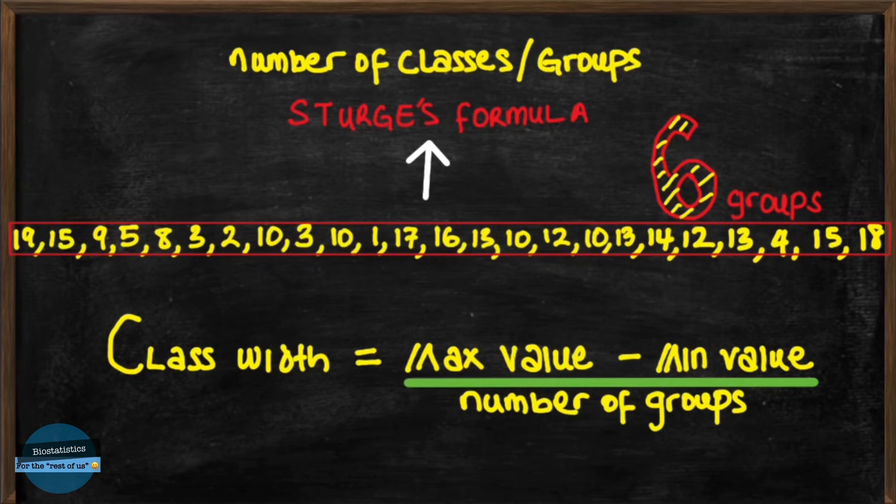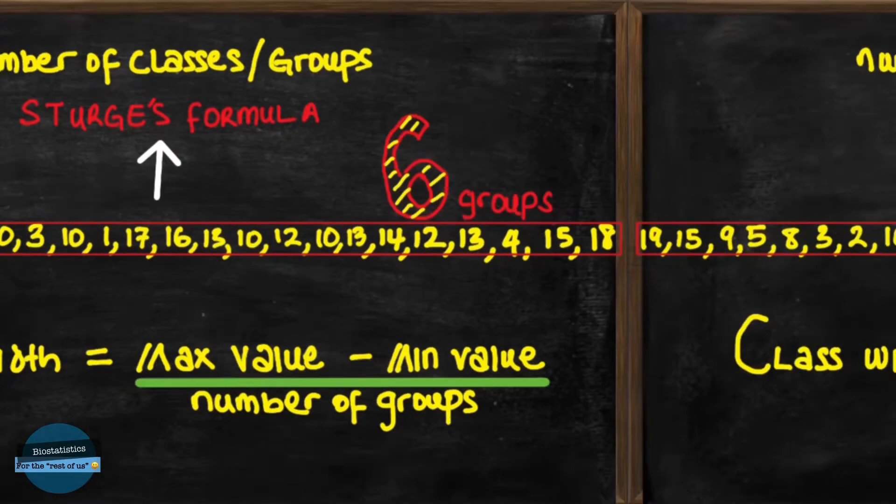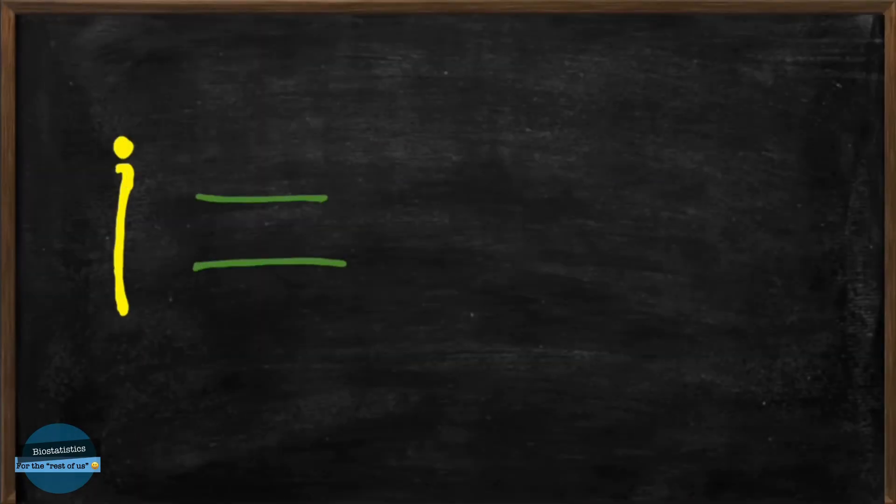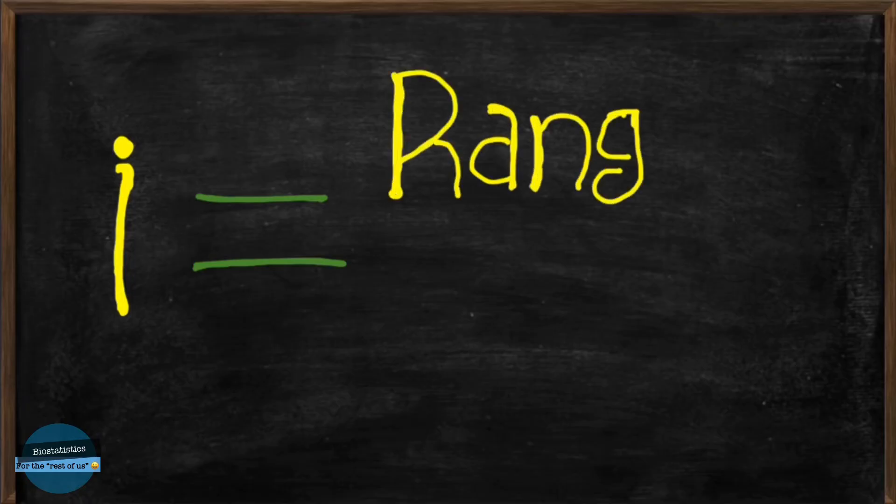class width is denoted by i. The maximum minus the minimum is also known as the range and the number of classes is denoted by k. So we have i is equal to range over k. Super simple formula.